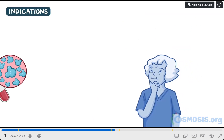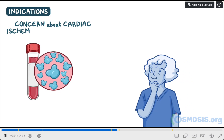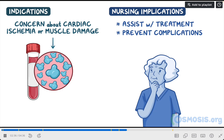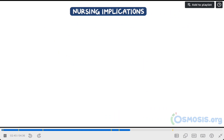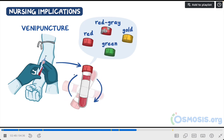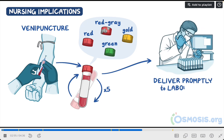CKMB is usually measured when there is a concern about cardiac ischemia or muscle damage. The priority goal of care is to assist with treatment and prevent complications. Begin by collecting a sample through venipuncture, typically using a tube with a red, red-gray, green, or gold top. Gently invert the tube five times to ensure mixing of the clot activator in the tube. After collecting the sample, deliver it promptly to the laboratory.